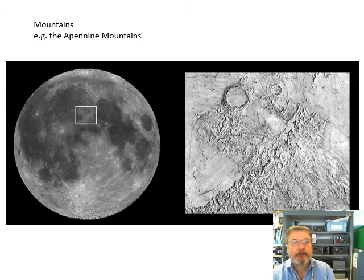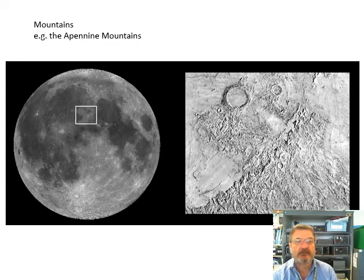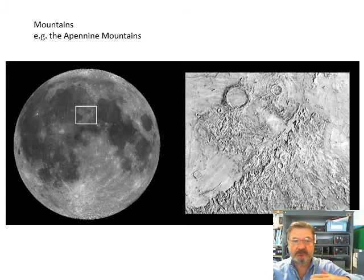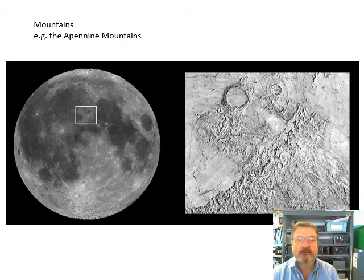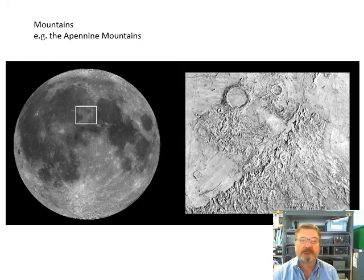Mountains. These are the Apennine mountains on the moon. Not caused in the same way as on Earth — on Earth, mountains are caused by the movement of tectonic plates coming together. On the moon, no. It's just the edge of very large maria, like the edge of large craters. There is no tectonic movement on the moon as far as we know. But there are the Apennine mountains.